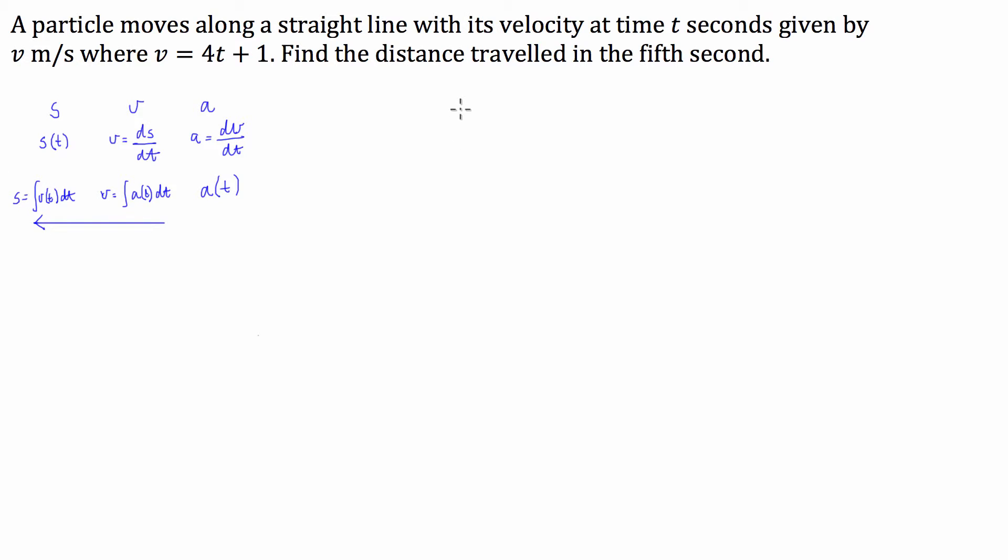So the distance travelled in the fifth second, well, if we have our seconds here from 0, 1, I usually do this to make sure I get the right second. From 0 to 1, that's going to be the first second, the second second, the third second, the fourth second, the fifth second. So we know that the fifth second is going to be from time equals 4 to time equals 5.